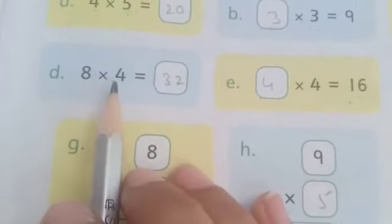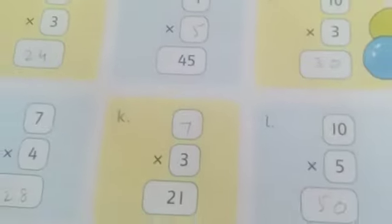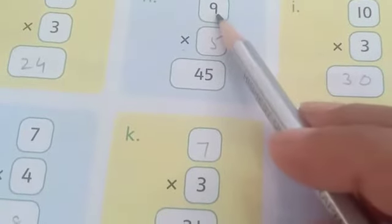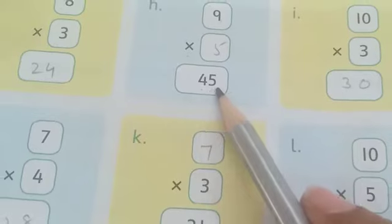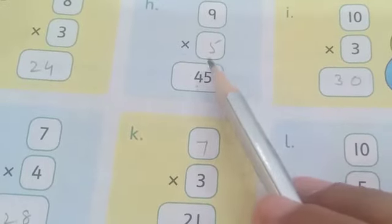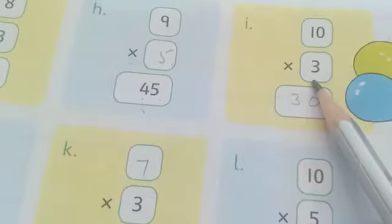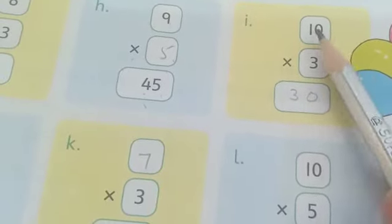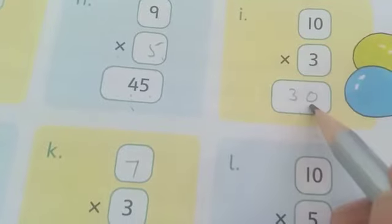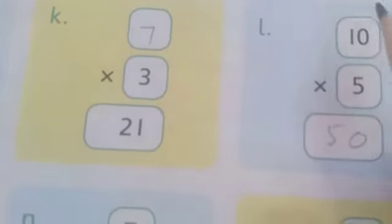ऐसे ही यहाँ पर four का table हम eight तक पढ़ेंगे — four eight's are thirty-two। इस question की थोड़ी shape change है। यहाँ पर हमारे पास nine है, answer में forty-five है, तो nine के table को five तक पढ़ेंगे तो forty-five आएगा, यहाँ five लिखेंगे। Ten का table three तक पढ़ेंगे तो thirty आएगा। इसे करने का एक और तरीका है: three zero is zero, three one is zero three — इस तरह से भी आप कर सकते हैं।